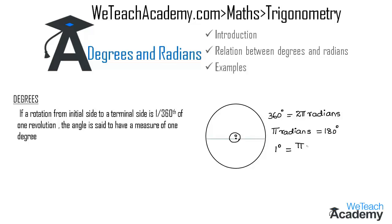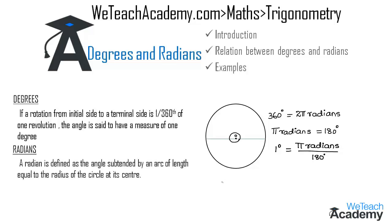In order to find the value of 1 degree, by transferring 180 to the right-hand side, we get π radians divided by 180. A radian is defined as the angle subtended by an arc of length equal to the radius of the circle at its center. The value of 1 radian can be found by transferring π to the right-hand side, giving us 1 radian = 180 degrees divided by π.